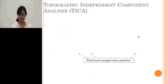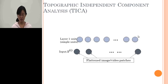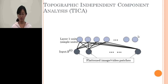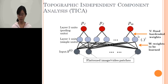TICA is a two-layer network. The input of the first layer is flattened image patches for scene information. The second layer activation is a dot product of the input and the weight matrix W, which we want to learn. The second layer output is a pooling layer that simply pools from the first layer's units, and this is fixed when we design the network.